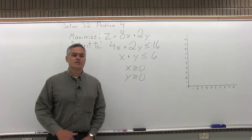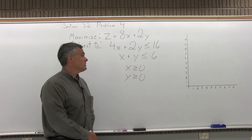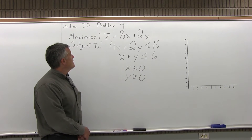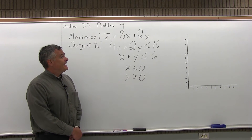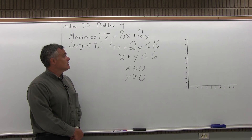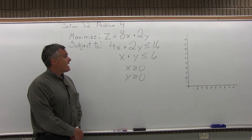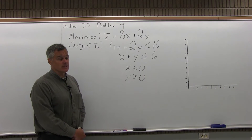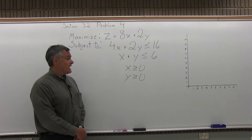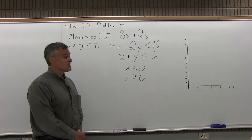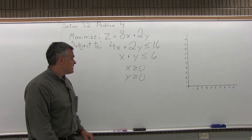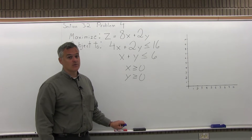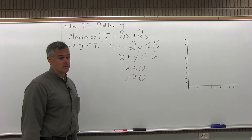This is Problem 4 from Section 3.2. It says: maximize z equals 8x plus 2y, subject to 4x plus 2y is less than or equal to 16, x plus y is less than or equal to 6, x is greater than or equal to 0, and y is greater than or equal to 0.